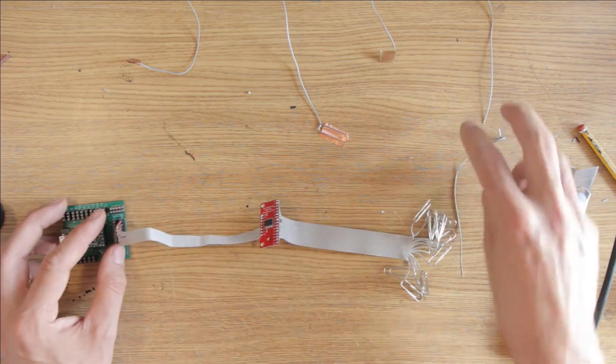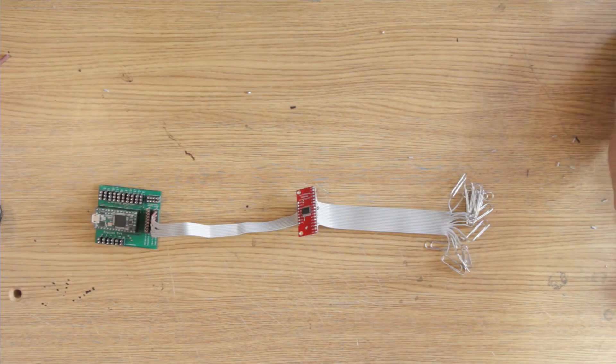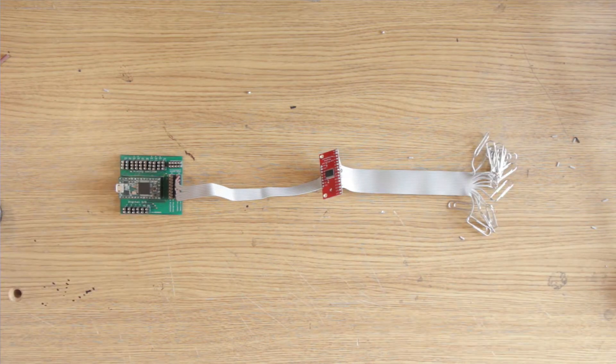And that's it - the multiplexer module is done. In the next couple of videos I will show you how I assemble some of the analog sensor modules, so stay tuned for that.